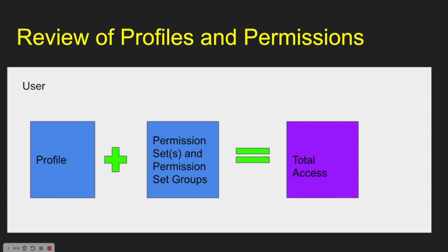The way this works overall with profiles and permission sets: we have a profile, we have our permission sets, and we have permission set groups, and that equals our total access for that particular user. The profile provides base permissions; permission sets and permission set groups are how we add additional properties and permissions to that user. Within a permission set group, we can have mute permissions that allow us to remove access within that group.